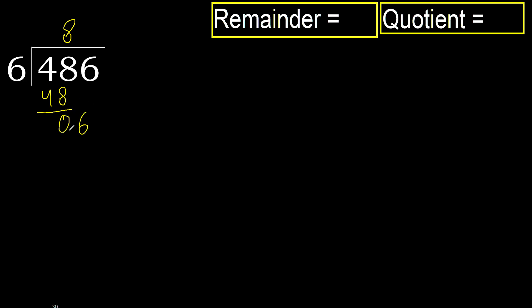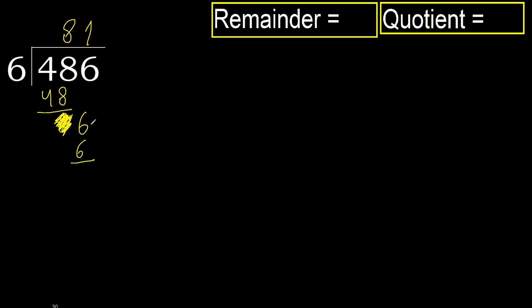Next. Bring down the 6. 6 multiplied by 1 is 6, which is not greater, ok. Subtract. Next — there is no number, therefore finish it.